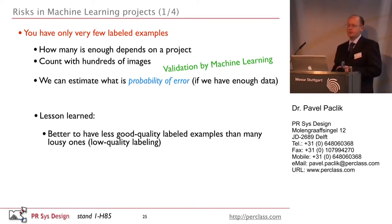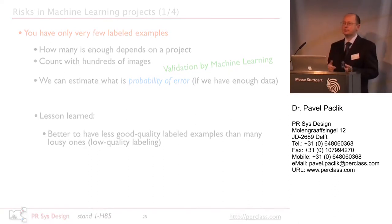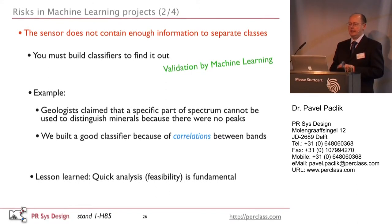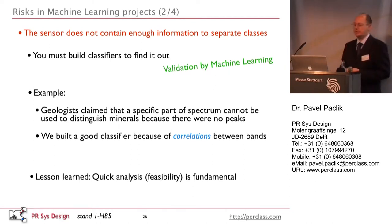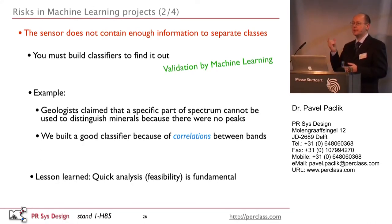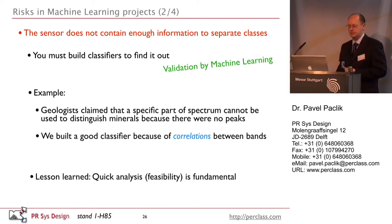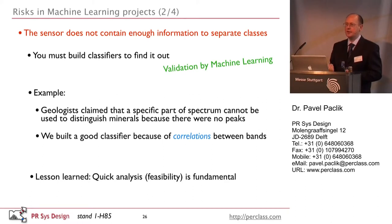The second risk is that your sensor may not contain the information needed to discriminate what you're looking for. This creates a chicken-and-egg problem: you need to build classifiers to find out if you can build classifiers. But you can use machine learning as a validation tool. One example: geologists claimed certain minerals couldn't be distinguished by part of the spectrum because there were no peaks. However, we could distinguish them by learning from correlations. Even domain experts can sometimes mislead you about what is and isn't possible.